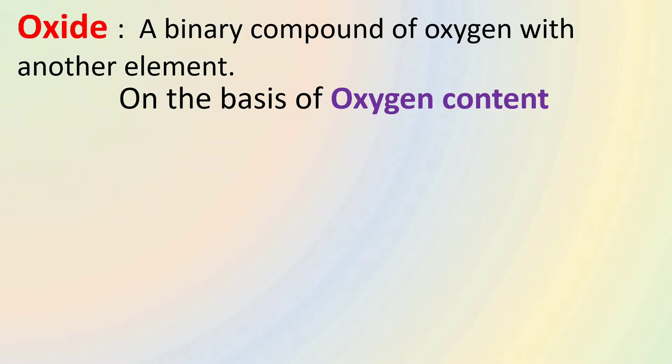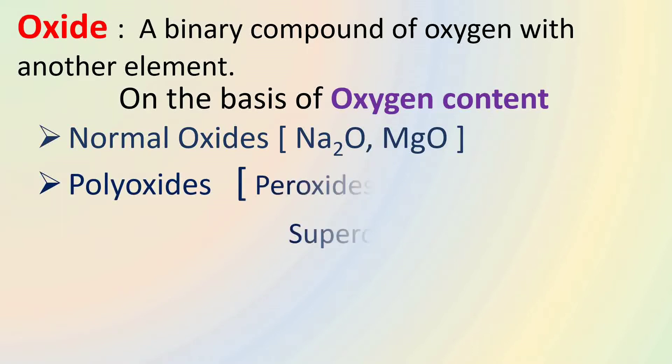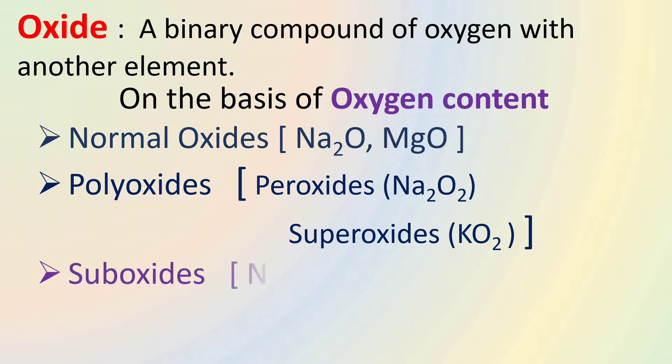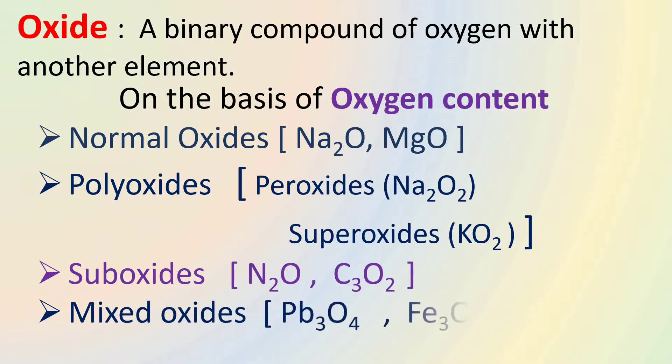On the basis of oxygen content, they can be classified into normal oxides where the content of oxygen is as much as it is permitted by the normal valency, for example Na2O, MgO. In polyoxides, the content of oxygen is more than permitted by normal valency, for example peroxides and superoxides. In suboxides, the oxygen content is less than permitted by normal valency, for example N2O, C3O2. And in mixed oxides, the oxides are made up of two similar oxides such as Pb3O4 is made up of PbO and PbO2, and ferrosoferric oxide Fe3O4 is made up of ferrous oxide and ferric oxide FeO plus Fe2O3.